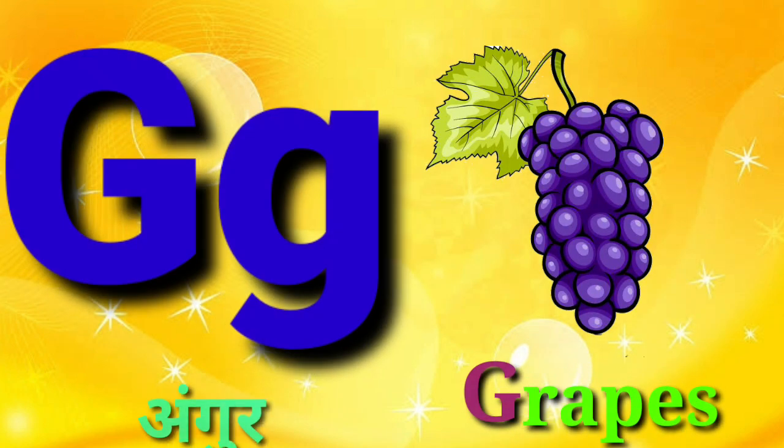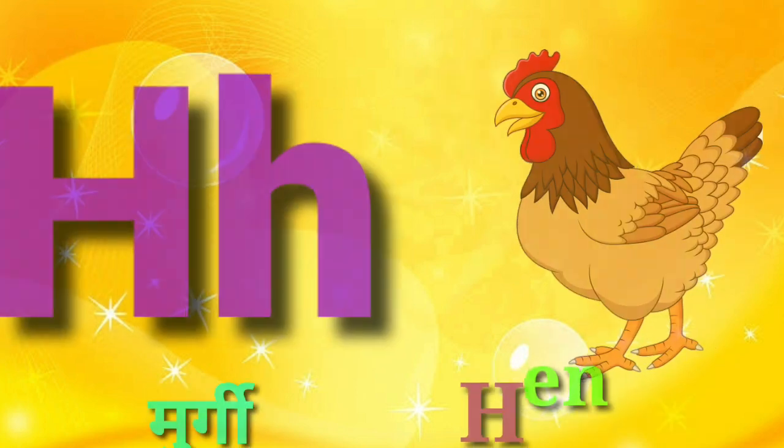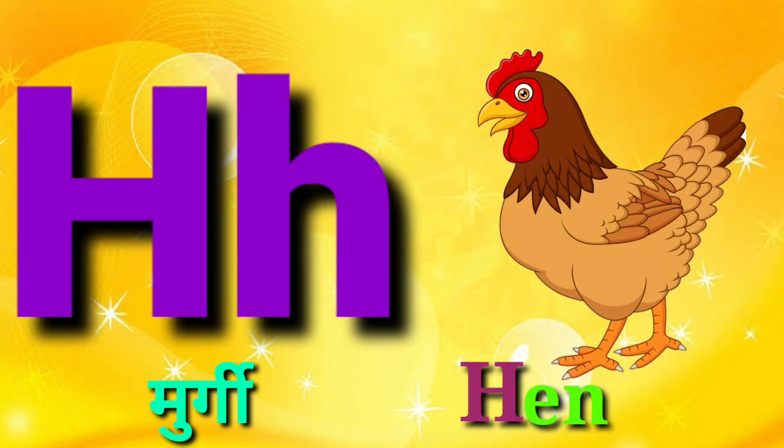G for Grapes, Grapes means Anggur. H for Hen, Hen means Murgi.